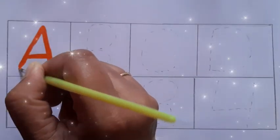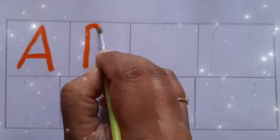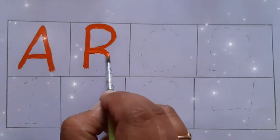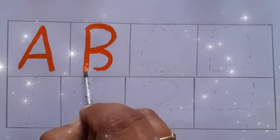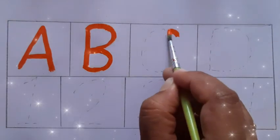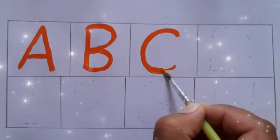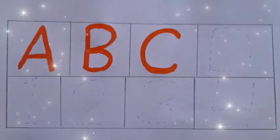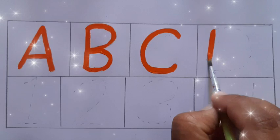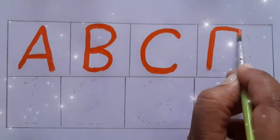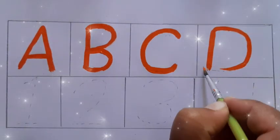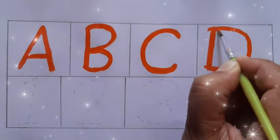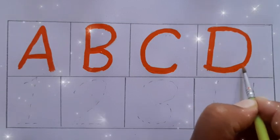A for apple. E for orange color. B for box, capital B. C for car, C for cow, capital C. D for drum, D for door, capital D. Orange color.